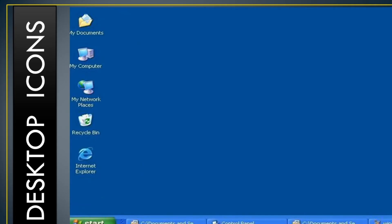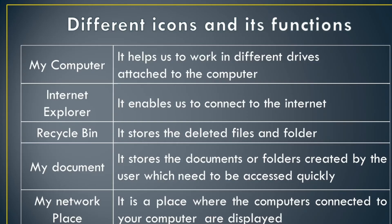The different desktop icons include My Computer, My Documents, My Network Places, Recycle Bin, and Internet Explorer. If you double-click on My Computer it will help you work on different drives attached to the computer. Our computer has a hard disk that can be subdivided into partitions, which are known as drives — there can be a C drive, a D drive, and so on. Internet Explorer helps us to browse the Internet.